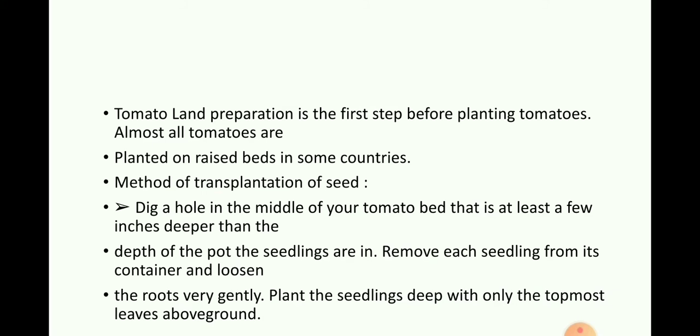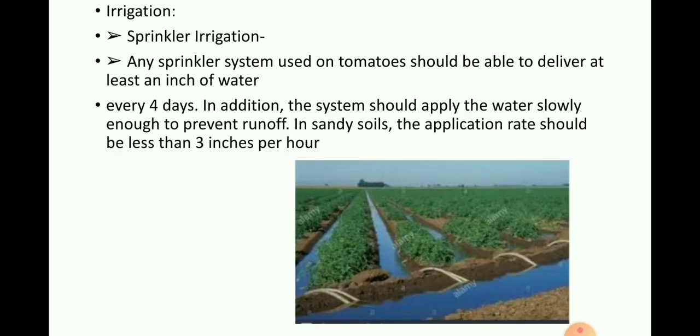Method of transplantation: Dig a hole in the middle of your tomato bed that is at least a few inches deeper than the depth of the pot the seedlings are in. Remove each seedling from its container and loosen the roots very gently. Plant the seedlings deep, with only the topmost leaves above ground.